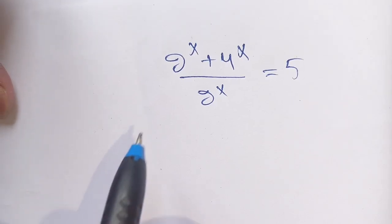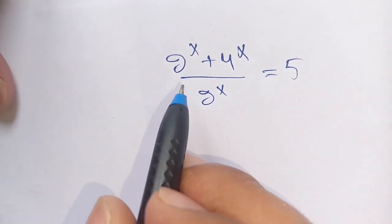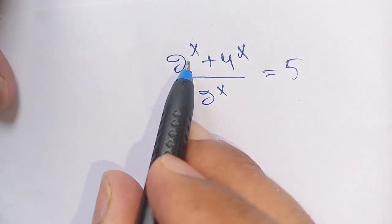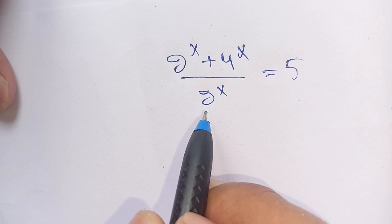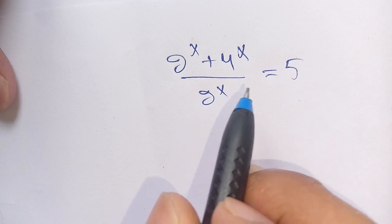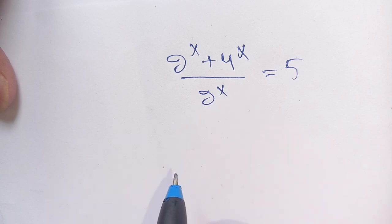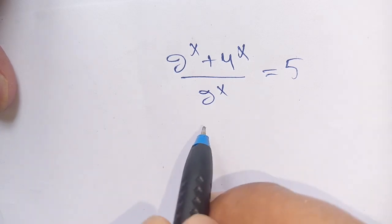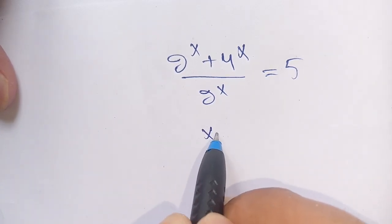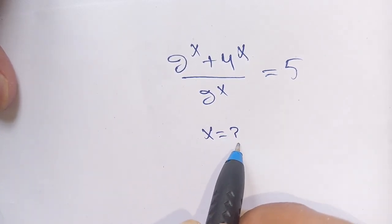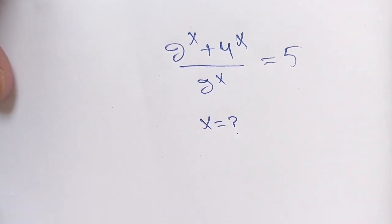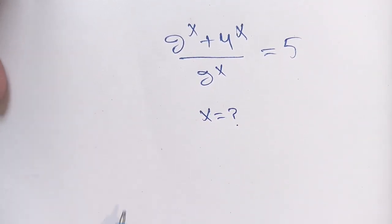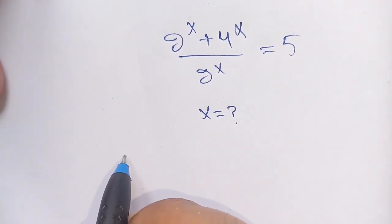Hello everyone. In today's video, we are going to solve (2^x + 4^x) divided by 2^x is equal to 5. We have to find the value of x which satisfies this exponential equation. Let us solve this.